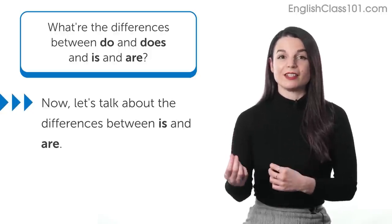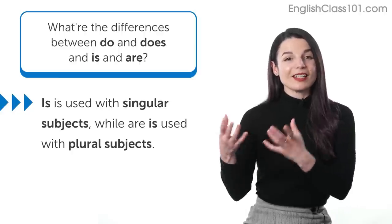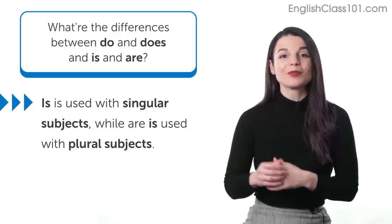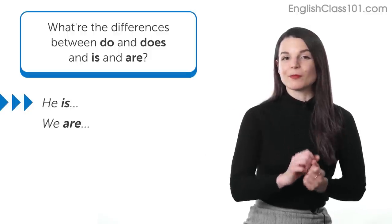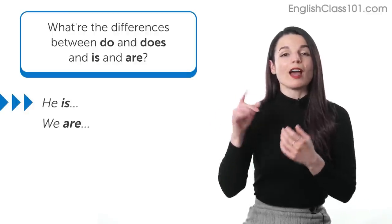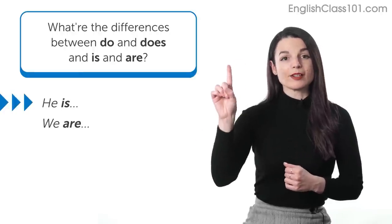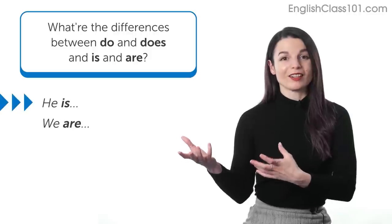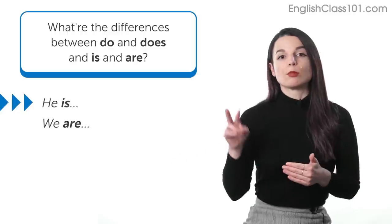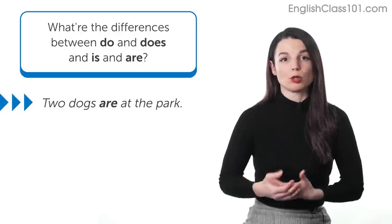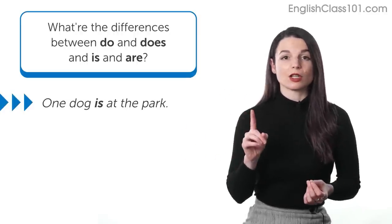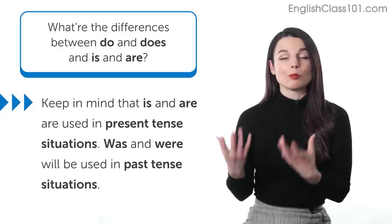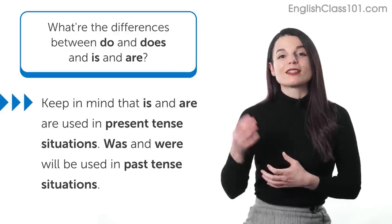Now let's talk about the differences between 'is' and 'are.' The key is that 'is' is used with singular subjects and 'are' is used with plural subjects. For example, 'he is something' uses a singular subject, while 'we are something' uses 'we,' which represents more than one person. We can also say 'two dogs are at the park' for plural, or 'one dog is at the park' for singular. So 'is' is for singular subjects, and 'are' is for plural subjects. Also, keep in mind these are used in present tense. For past tense, we use 'was' and 'were.' I hope this helps you understand the differences between 'do' and 'does' and 'is' and 'are.'